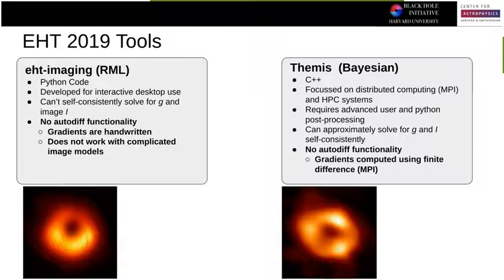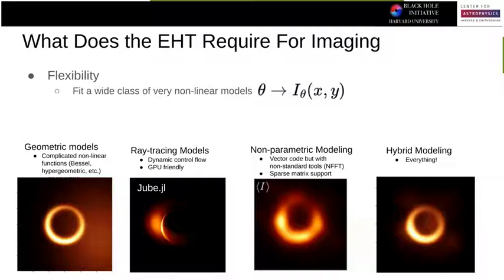For instance, if we wanted to do something really complicated like solve a fluid simulation as our image on the sky, we couldn't do this because you wouldn't be able to propagate the gradients through. THEMIS, on the other hand, did autodiff in the sense that it did finite difference — with all the wonderful gradient errors and the poor scaling. And the solution to the poor scaling was use more cores, so we MPI'd everything.